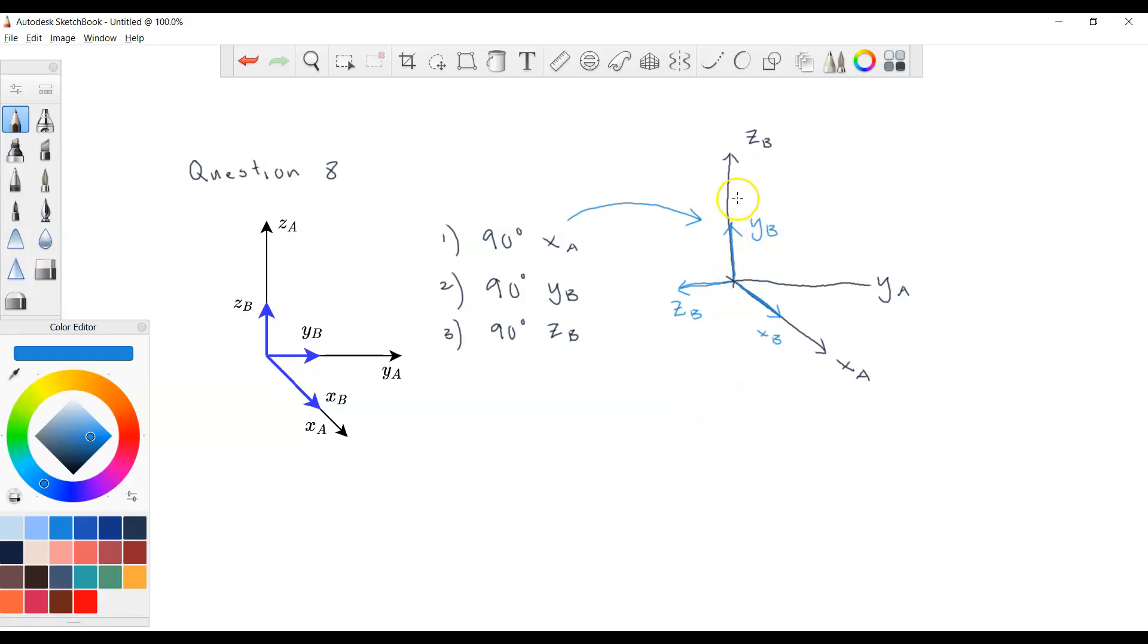So I'm not going to draw the coordinate frame A anymore. This is zA. So if I rotate 90 degrees above yB, we can see xB will be here. So yB will not change. So I have xB here, and zB will be here.